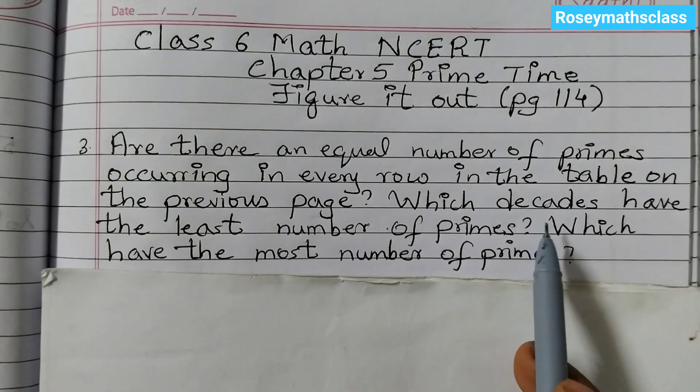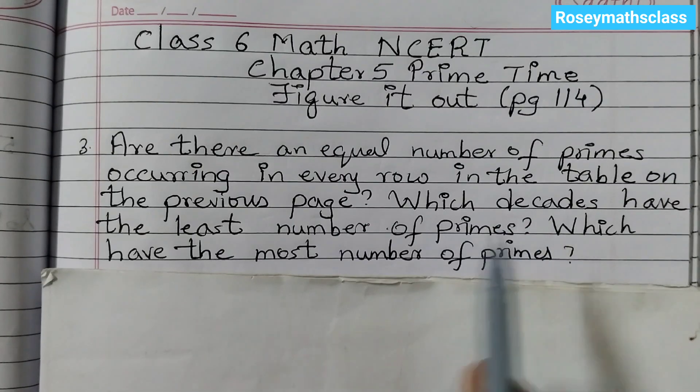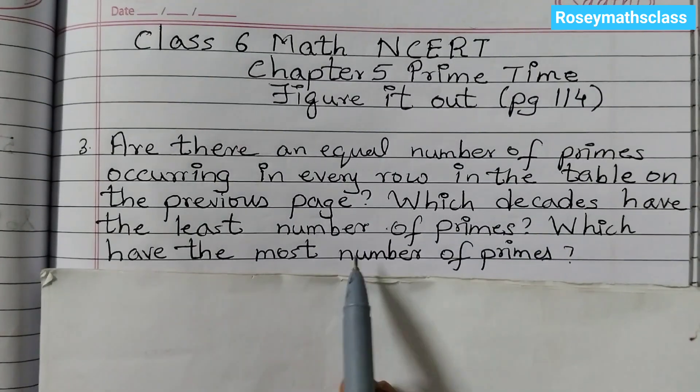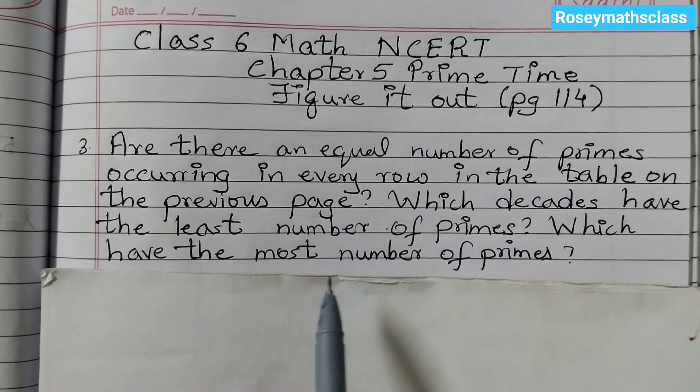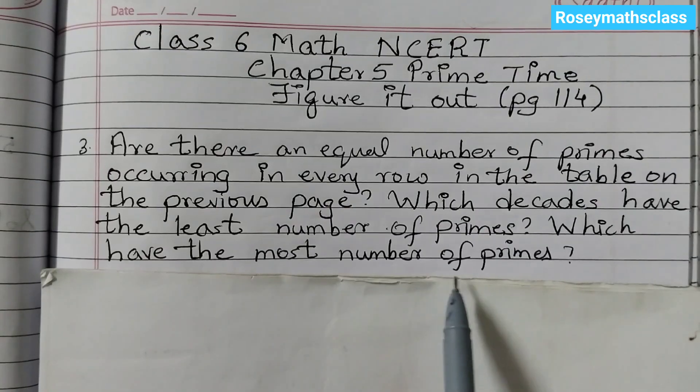Decade means a group of 10. So we need to find out which group of 10 has the minimum or least number of primes and which has the most or maximum number of primes.